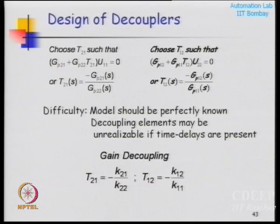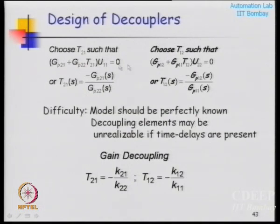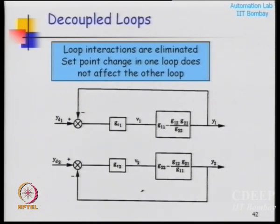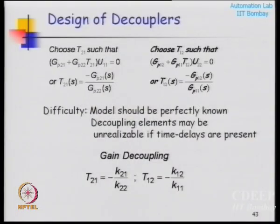One intermediate way is what I call gain decoupling - do not worry about the dynamics, just look at the steady-state gain of these two elements and do decoupling. You are not going to get perfect decoupling, but something is better than nothing. If T21 and T12 are not realizable, or you do not have perfect models, gain decoupling is something you can try.